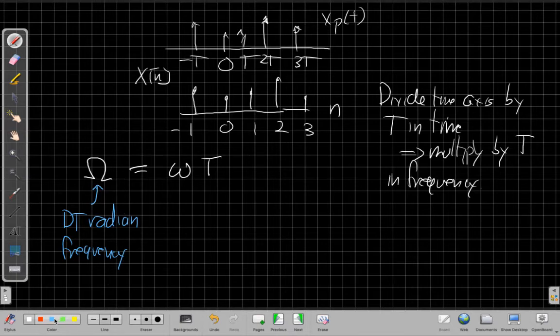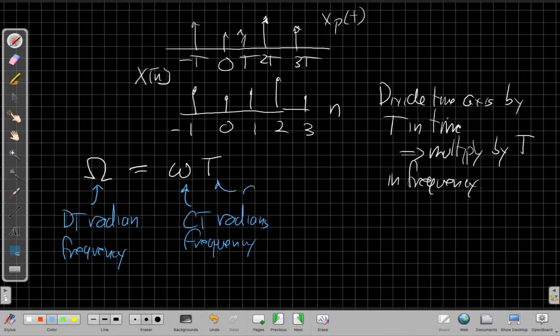So we've been using that little omega earlier. But now to make it clear which is which, we're going to use little omega for continuous time radians. And then this is still our sampling period T.